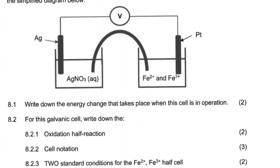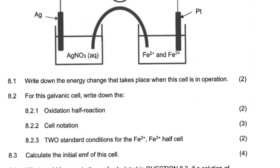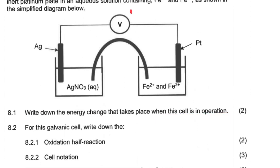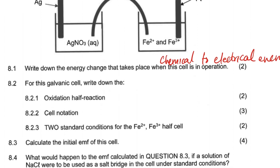We have the silver nitrate here, which is a soluble salt. Now, write down the energy change that takes place in this cell. In the galvanic cell, which is also called the voltaic cell, the energy conversion is from chemical to electrical — there's a production of electrical energy.